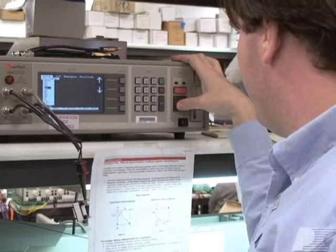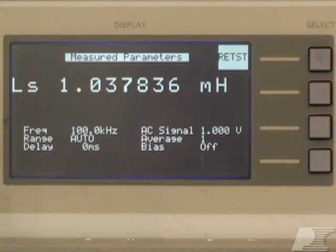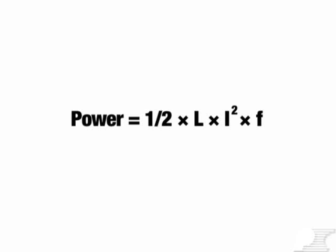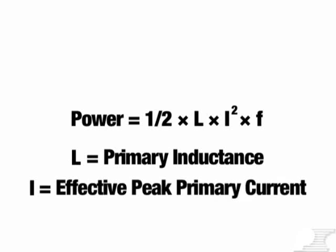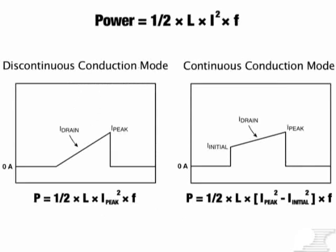Next, verify that the transformer primary inductance value matches that specified in your PI Expert design results. Power transferred in a flyback transformer is proportional to one-half LI squared F, where L is the primary inductance value, I is the effective peak primary current, and F is the switching frequency. For discontinuous conduction mode designs, I is equal to the peak primary current. For continuous conduction mode designs, the effective peak primary current is equal to the difference of the initial current squared and the peak current squared during the MOSFET on time.